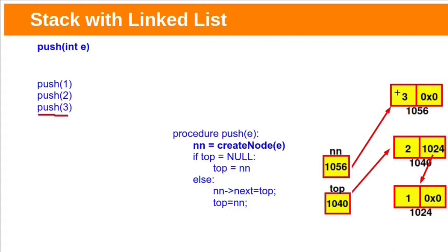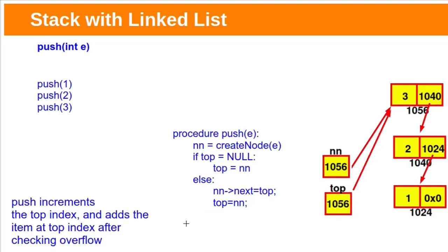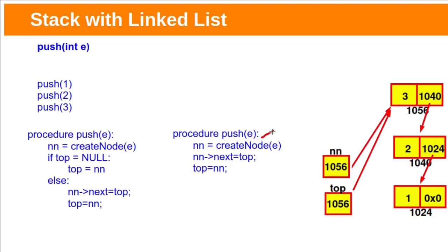Similarly, for a third push, a new node is created. Its next field should point to top — copy top's contents into the new node's next field. Now the new node points to the previous top. We have three nodes in the stack, but top still points to the second node, so we update top to point to the most recently added node. In linked list implementation, we do not need to check for overflow condition because linked lists are not stored contiguously and can grow as needed.